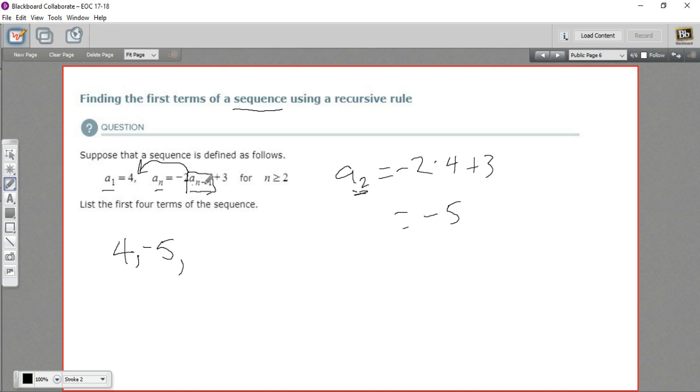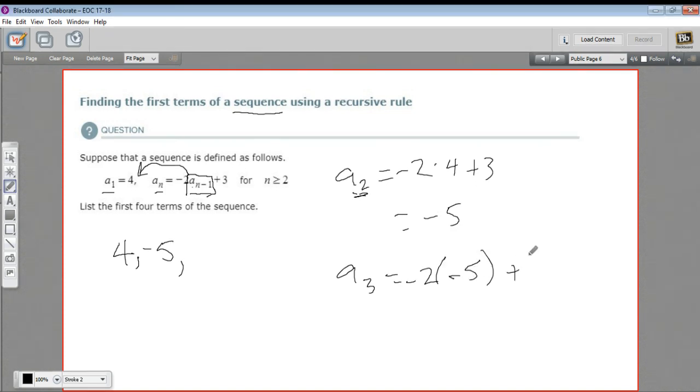Now, we just keep repeating this process. We want to find a sub 3. So that's going to be a negative 2 times this element before. Well, the element before is now negative 5, and then plus 3. So here, we've got to be careful about our signs. Negative 2 times negative 5, that's a positive 10. Plus 3 is 13.